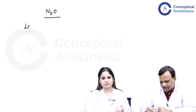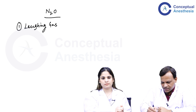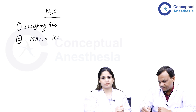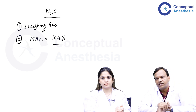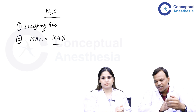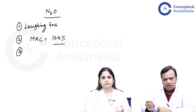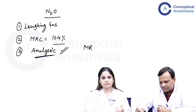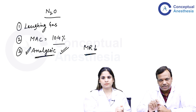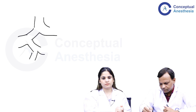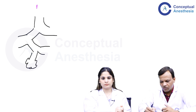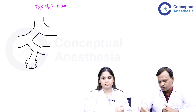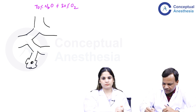Nitrous oxide is also known as laughing gas. It has a MAC of 104%, meaning it is not a complete anesthetic agent — even giving 70%, the highest possible, cannot produce anesthesia. It is commonly given with other drugs. Nitrous oxide is not a good anesthetic agent but is a very good analgesic agent — that is its main property. It is also a poor muscle relaxant. When we give 70% nitrous oxide along with 30% oxygen and another agent like halothane at around 2%, nitrous oxide has low blood gas partition coefficient and will quickly diffuse from alveoli to blood.